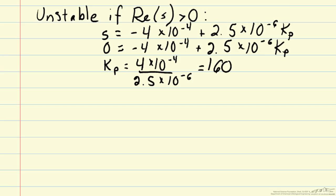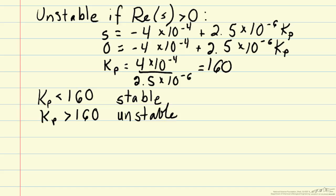This tells us that if kp is less than 160, then the closed loop system will be stable, whereas if kp is greater than 160, then the closed loop system is unstable. Let's consider a value of kp equals negative 1,000. We considered that in the previous screencast.